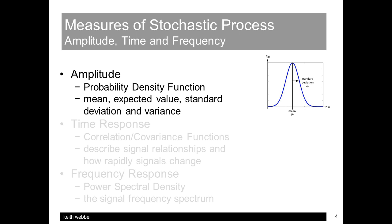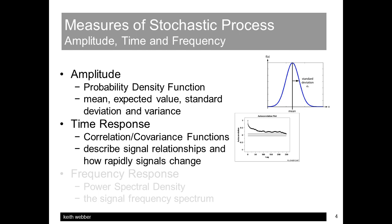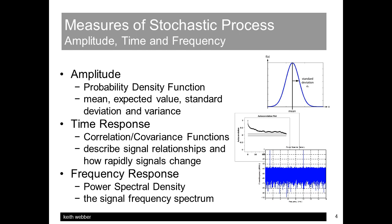The correlation and covariance functions are time domain measures of signal relationships, and how rapidly the signal changes from one time instant to the next. Faster changing signals mean higher frequency components, and the power spectral density function is the related frequency domain measure.